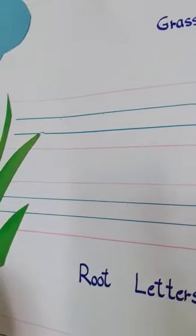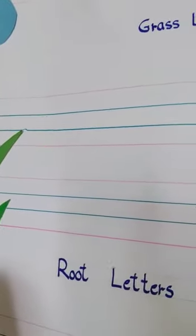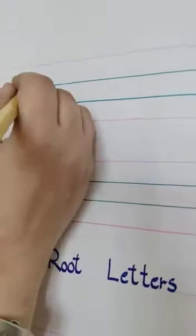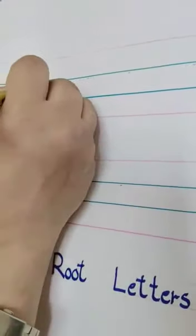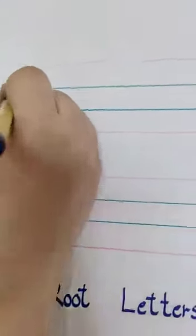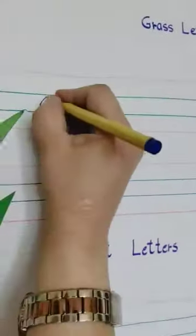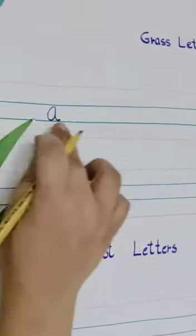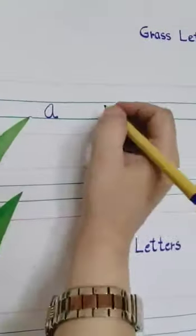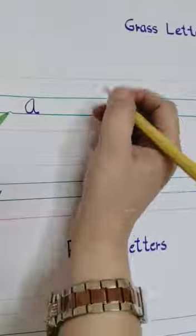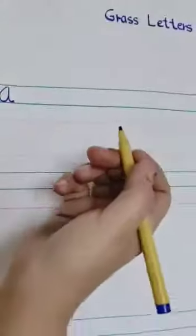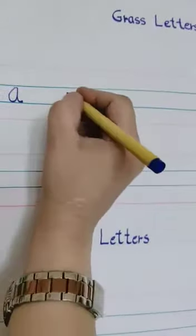So let's see which are the grass letters. We will start with A again. Is A a grass letter? Yes, because it comes into the center two lines. B is in the sky letter set, so it's not a grass letter.